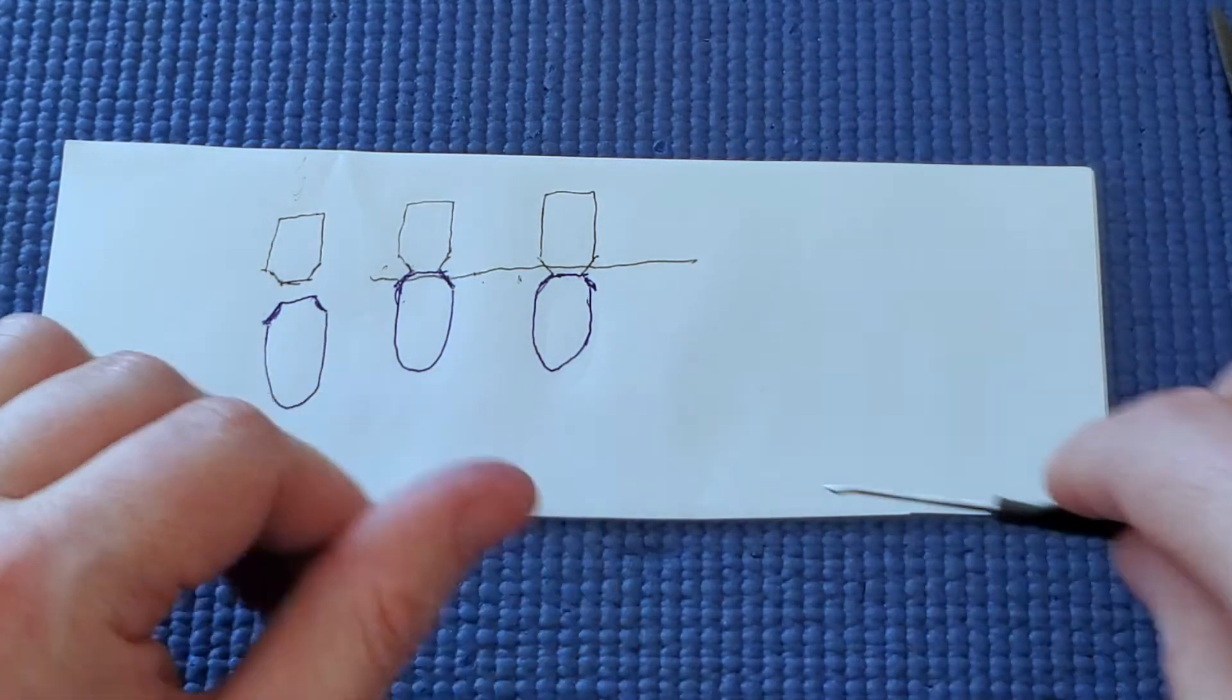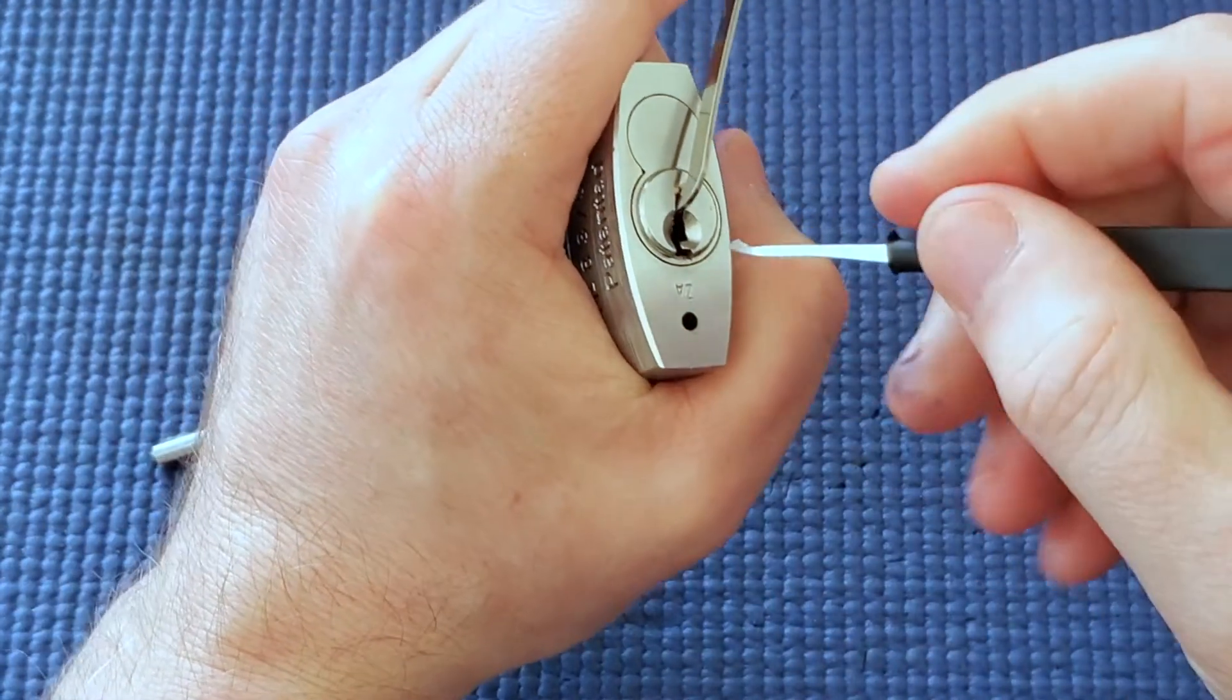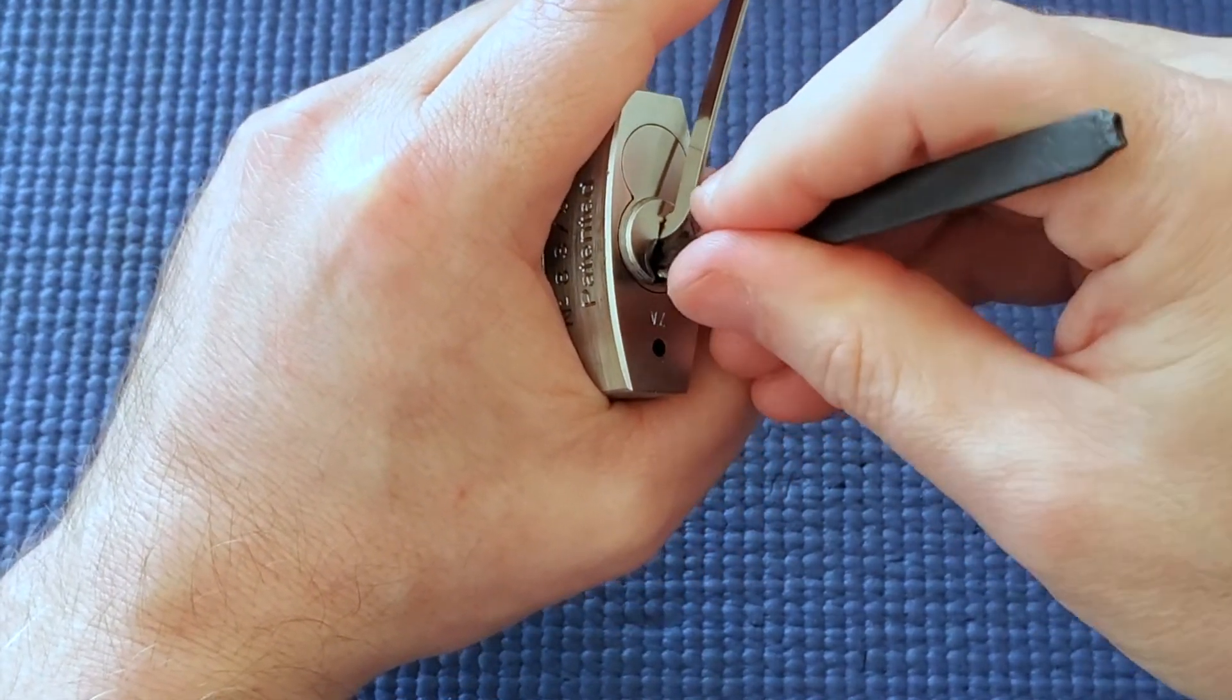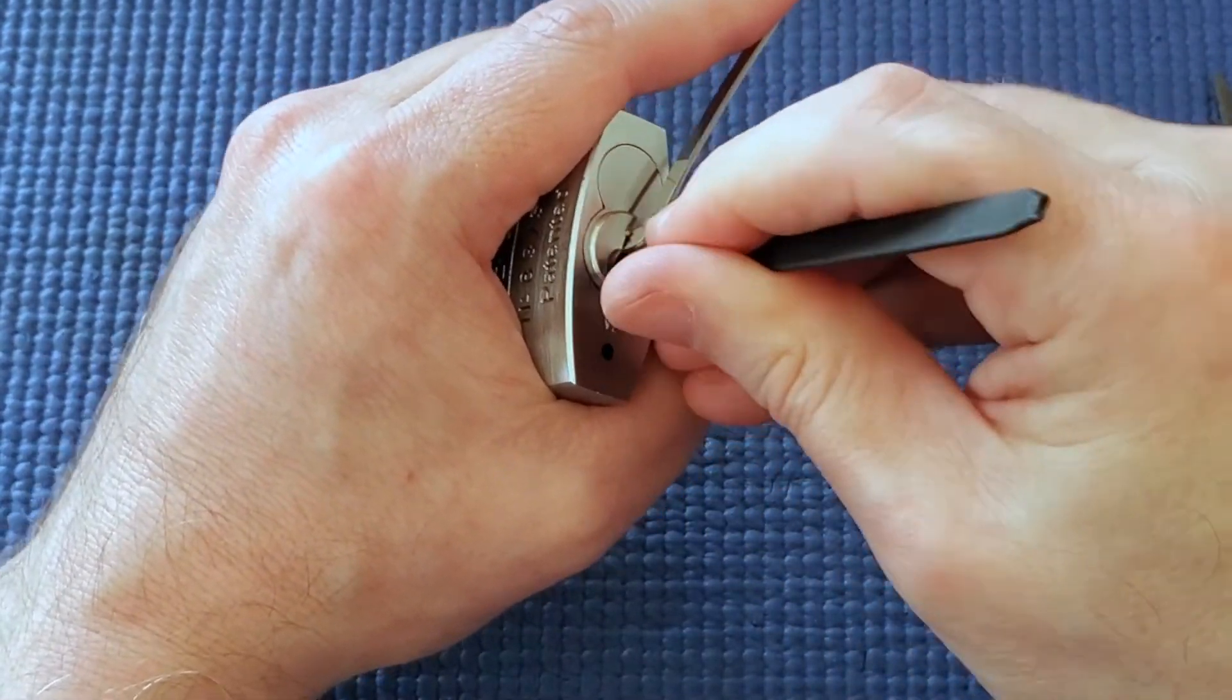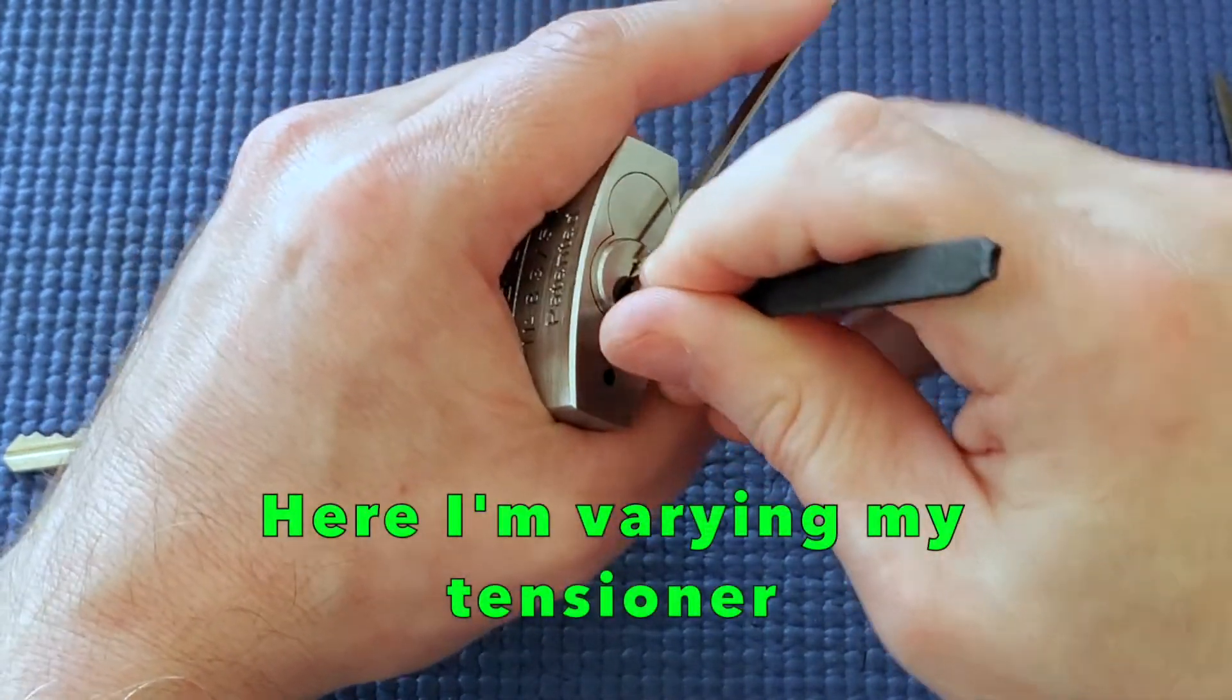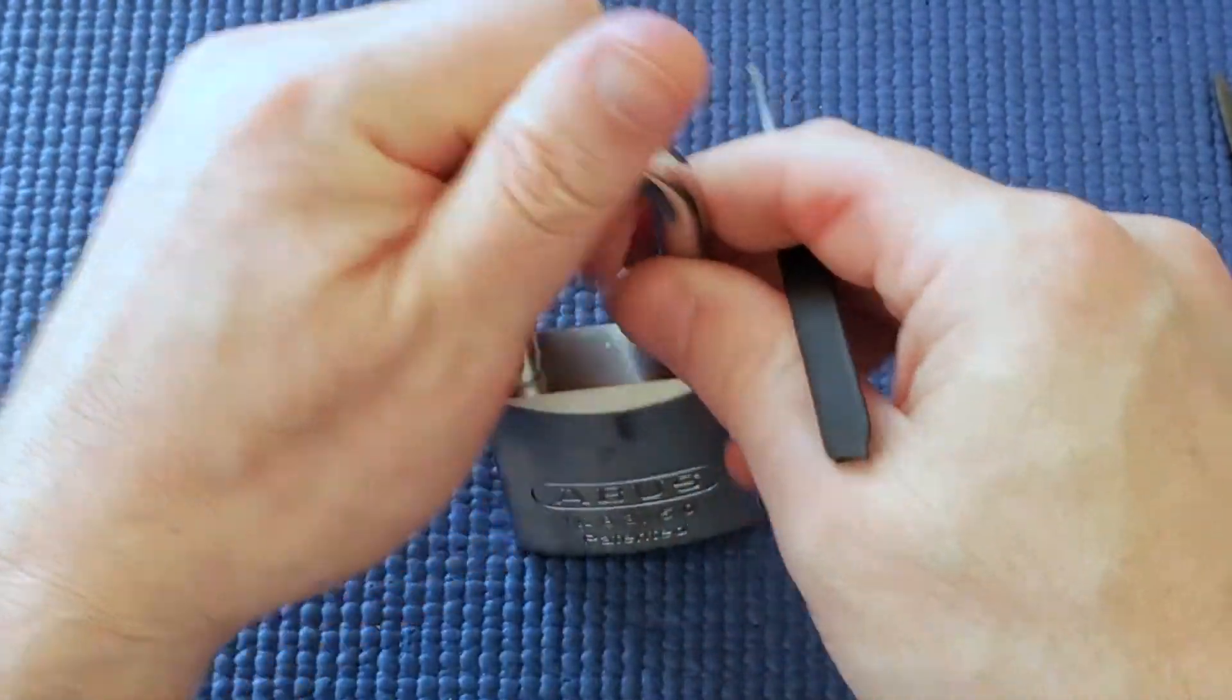So what I do: top of the keyway tension, it's locked up. Starting at the back of the lock, everything seems jiggly, everything seems set, so I'm going to rake across all the pins, tension a bit, and it opens. That's how I get into this lock. Thanks!